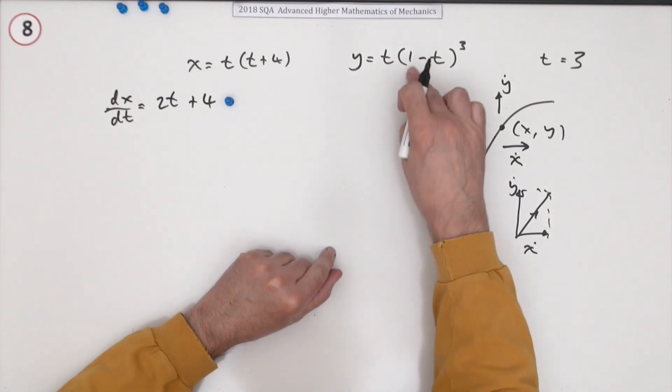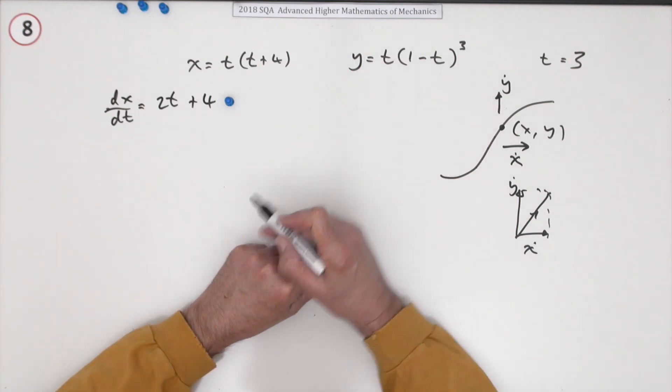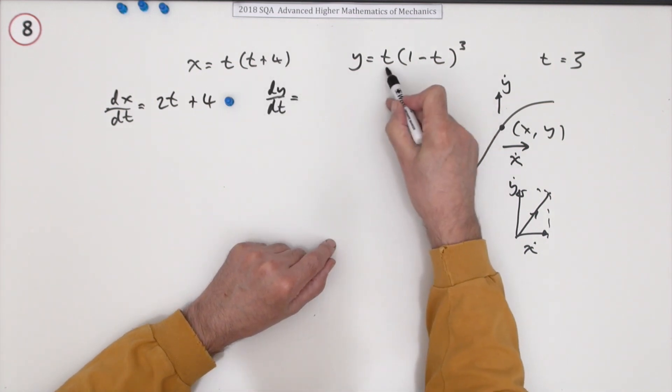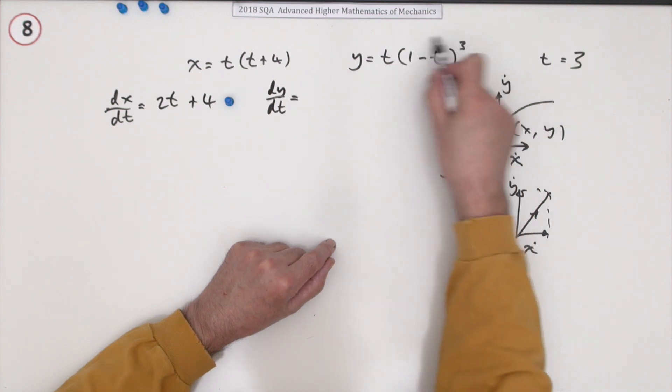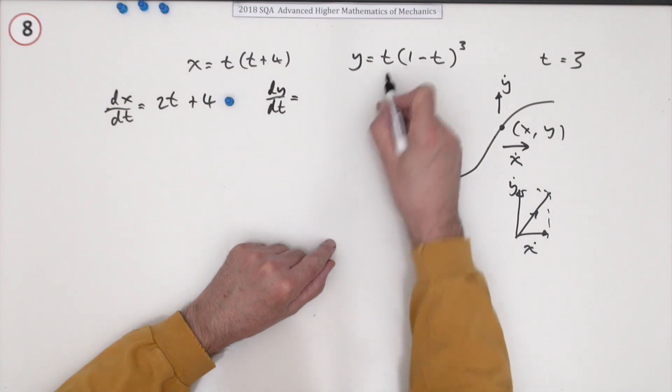This is a bit more cumbersome because I don't want to multiply that out, so I'll just have to use the product rule. And of course there's a further complication because the second part is actually a function of a function, so I'll have to use the chain rule part there.